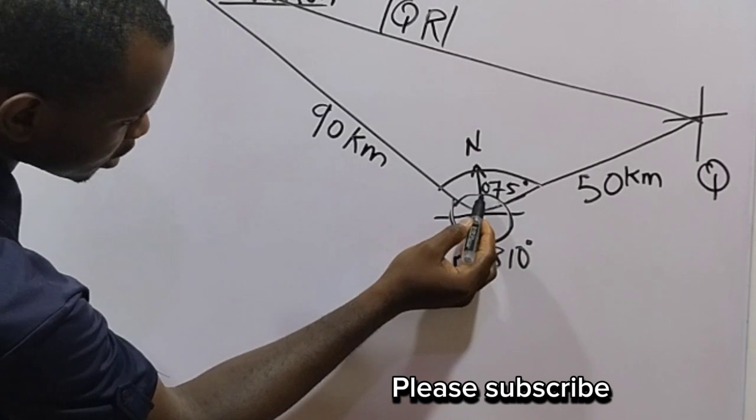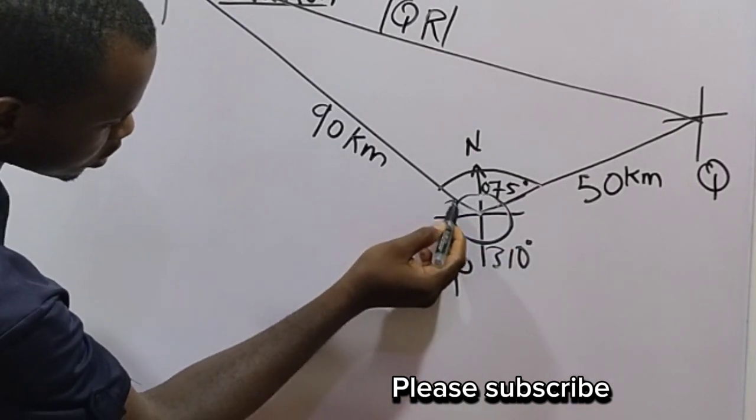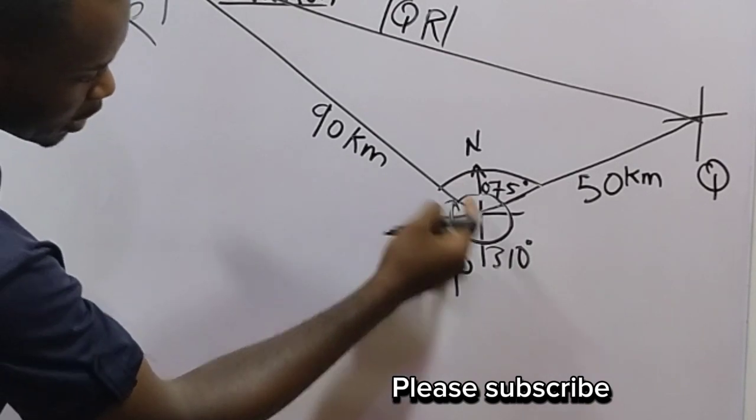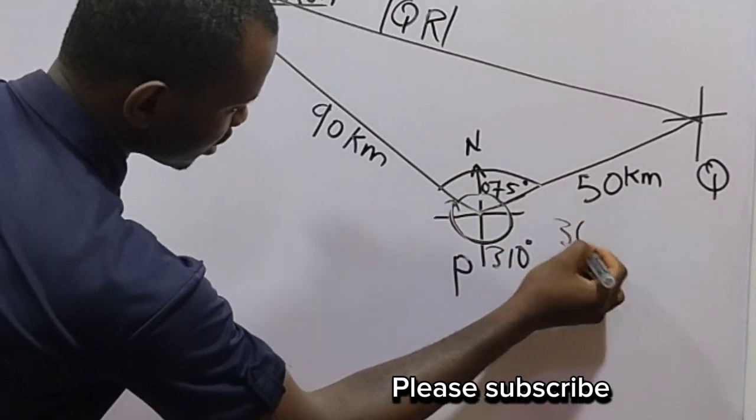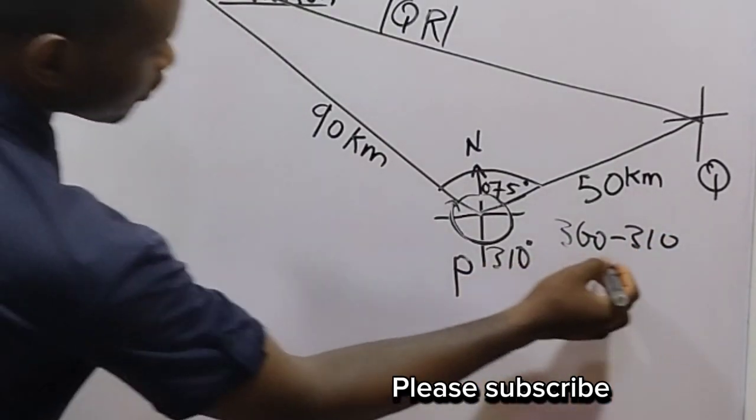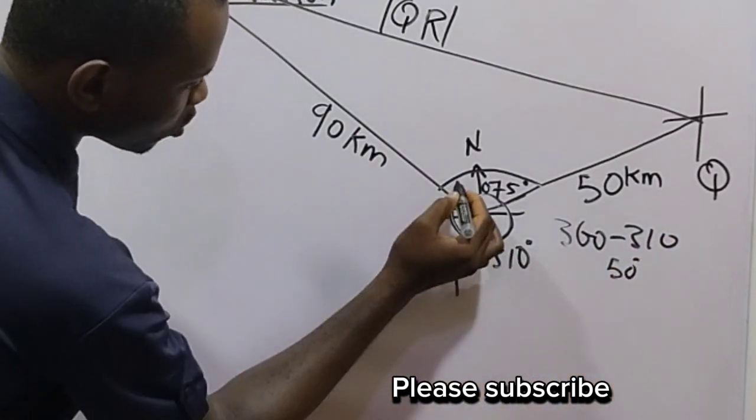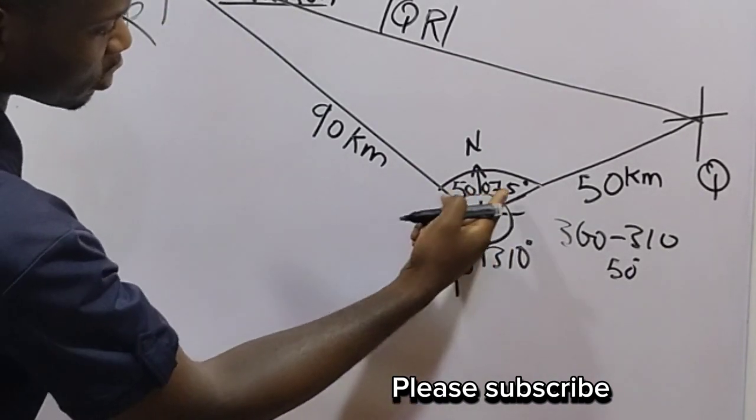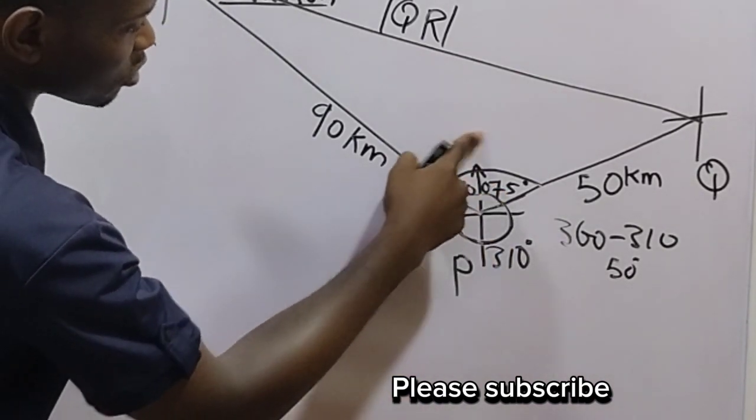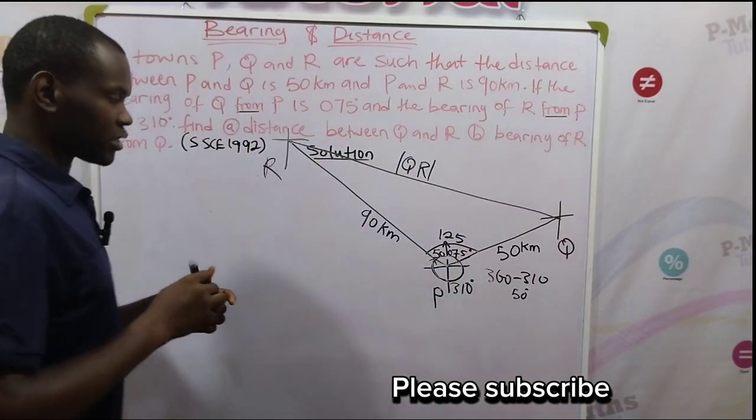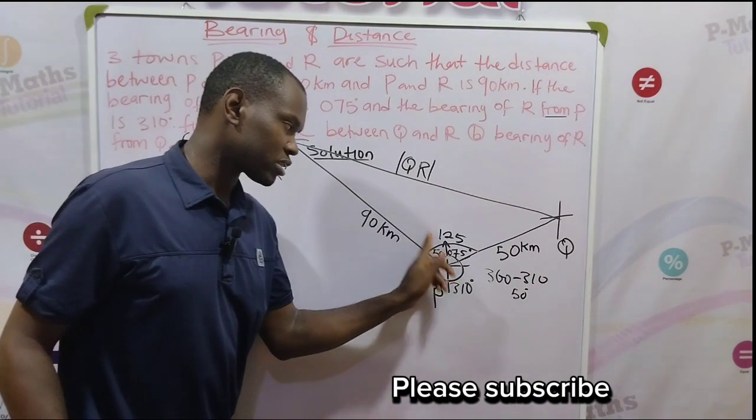Take note that from here down to this point we have 310. So if I want to get this remaining part, I would say 360 degrees minus 310. That would give me 50 degrees. So in here I have 50 degrees. So 50 plus 75, we have 125. So the angle included in this diagram is 125.